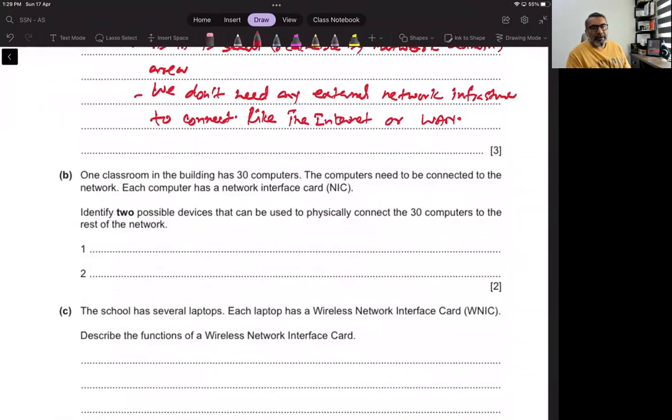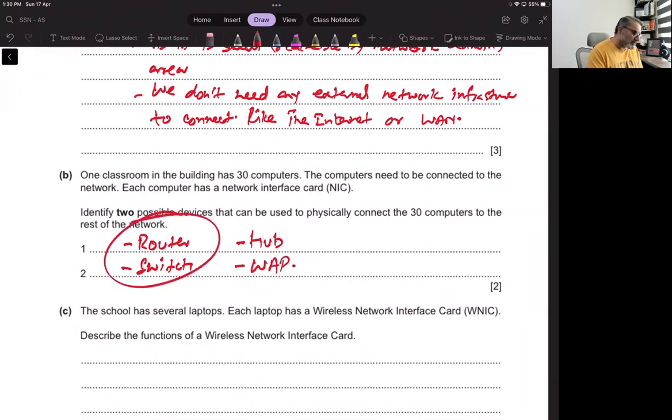One classroom in the building has 30 computers. The computers need to be connected to the network. Each computer has a network interface card. Identify two possible devices that can be used to physically connect the 30 computers to the rest of the network. Router and switch. And wireless access point. You need just two, so write these two.